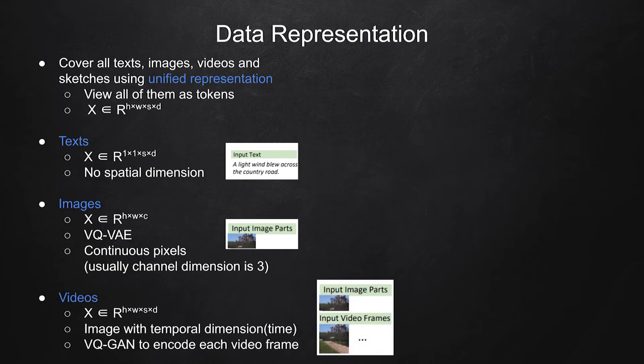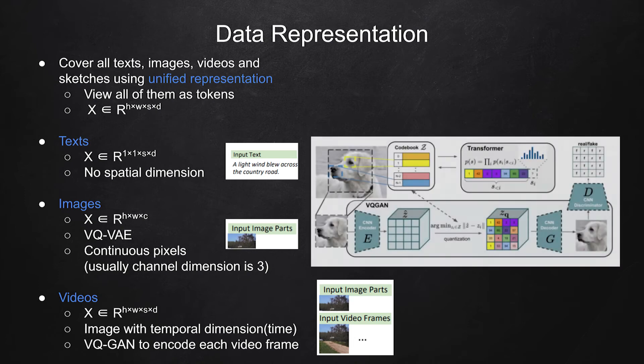In the video domain, we can think of this as an image with temporal dimension, which is in time. Authors see videos as an extension from the image domain. They simply use two-dimensional VQGAN to encode each frame of a video, and show that this simple way can also generate temporally consistent videos and benefit from both image and video datasets.